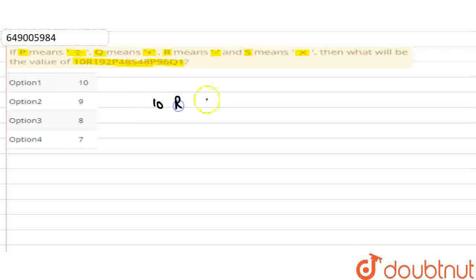We have given 10R192, then P48, S48, P96, then Q and 1 are given. This value is called R, P, S, P, and Q.